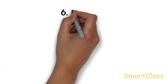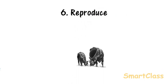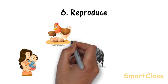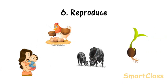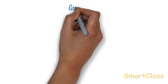The sixth characteristic of living things is they reproduce. All living things produce young ones of their own kind. Animals reproduce by giving birth to babies or by laying eggs from which babies hatch. Plants reproduce by producing seeds or spores. Non-living things cannot reproduce.